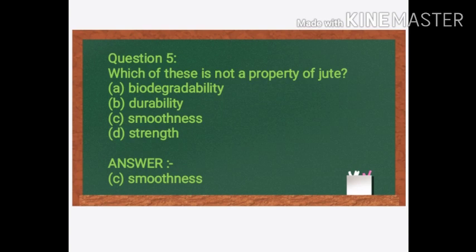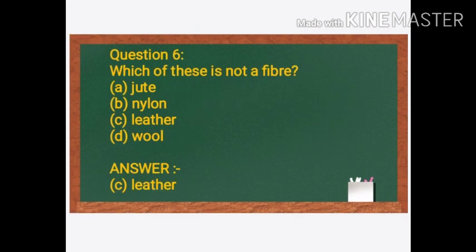Next question: Which of these is NOT a fiber? Options: A. Jute, B. Nylon, C. Leather, D. Wool. The answer is C. Leather. Leather is not a fiber. Jute, Nylon, and Wool are all fibers.